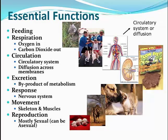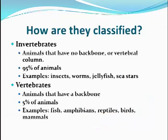We also have a response system — your nervous system — which is why you can feel it when someone taps you on the shoulder, or why your brain works the way it does. We also move, using our skeleton and muscles. And then there's reproduction, mostly sexual reproduction, although some organisms can reproduce asexually.